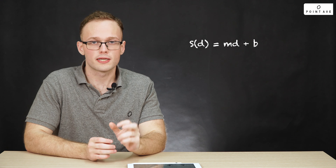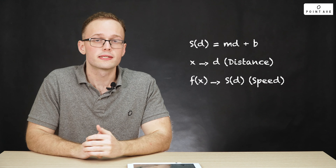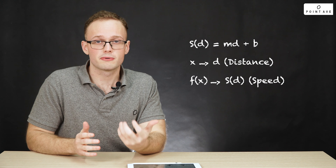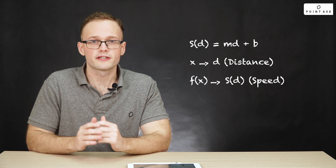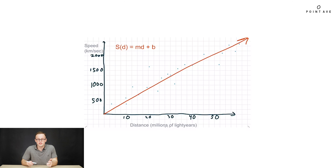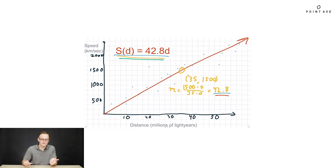The next step is our parameters. Our function model is s(d) = md + b, where we've substituted x for d (distance) and f for s (speed). So our two parameters are m and b from f(x) = mx + b. We start by seeing that our line goes through the origin, telling us that b is equal to zero. Next we find the slope by choosing one point on our line — this one at (35, 1500) — and plugging that into our slope equation, finding that our slope is about 42.8. This gives us a final equation of s(d) = 42.8d.